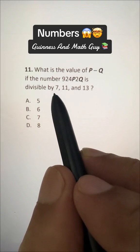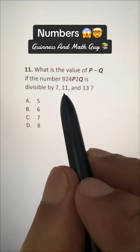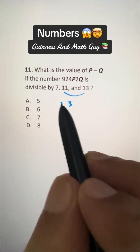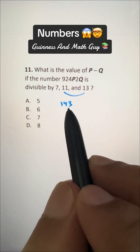To take the LCM of 7, 11, and 13, all of them are prime numbers, so we have to multiply them. 11 times 13: write 1 and 3, and 1 plus 3 is 4, write 4 in between. So 11 times 13 is 143.